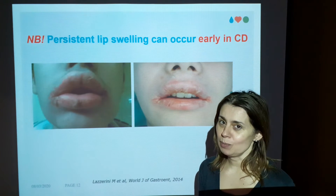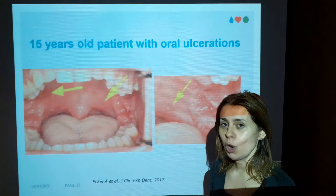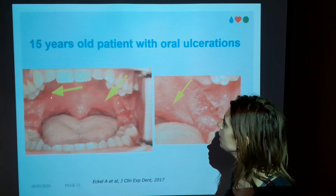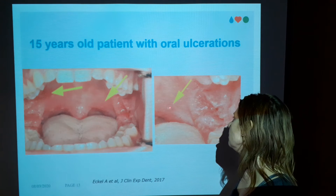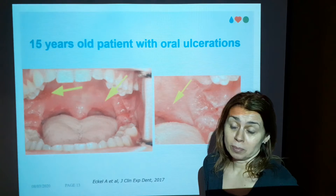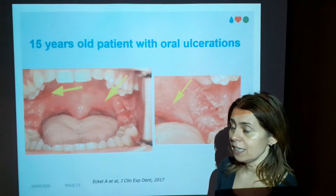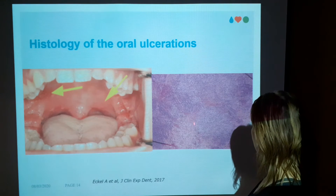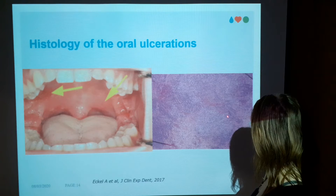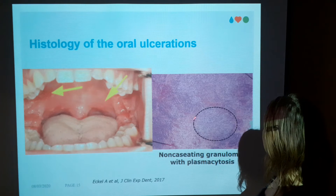If there is only one thing to remember from this discussion, it is that kids with persistent lip swelling can have Crohn's disease. A different patient with a completely different clinical picture: a 15-year-old with multiple oral ulcerations that are quite unspecific — they look like aphthae. A dentist would normally not take a biopsy from aphthae-like lesions, but in this case they were persistent and accompanied by fever and fatigue. The pathology shows a quite unspecific inflammatory reaction under the epithelium, but deep in the tissue we can see again the accumulation of chronic inflammatory cells organized as a granuloma.